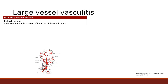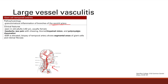Let's get into large vessel vasculitis. The first one is giant cell temporal arteritis. The key thing here is it's granulomatous inflammation of the branches of the carotid artery. There's a picture of all the branches of the carotid artery — they go up to the jaw, the temple, and the eyes. The clinical picture is an older adult who is usually female, over 50 years old.